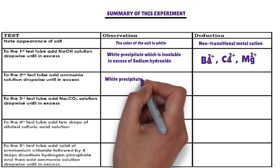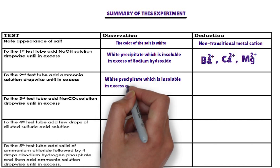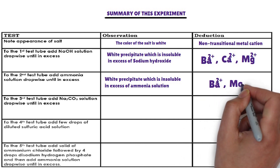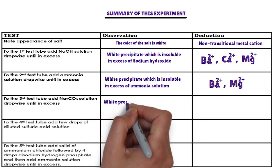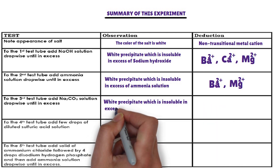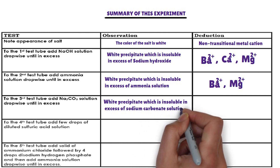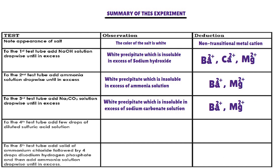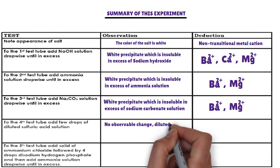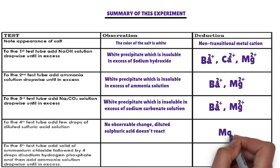In the second test tube, diluted ammonia solution is added. The cations from the above list that form a white precipitate with diluted ammonia, insoluble in excess, are barium ion and magnesium ion. In the fourth test tube, diluted sulfuric acid is added. The cation from the above list that does not react with diluted sulfuric acid is magnesium ion.